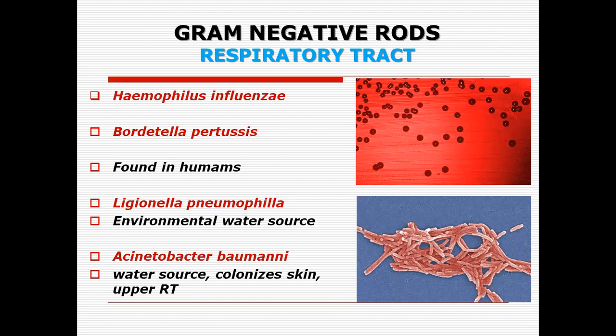Haemophilus influenzae and Bordetella pertussis are exclusively found in humans — they do not have any animal host. Legionella pneumophila is found in environmental water sources, and Acinetobacter baumannii is also a water source organism that colonizes the skin and is present in the upper respiratory tract as normal flora. So Haemophilus influenzae and Bordetella are exclusively human organisms, whereas Legionella and Acinetobacter have their source in water, in addition to colonizing skin and upper respiratory tract.